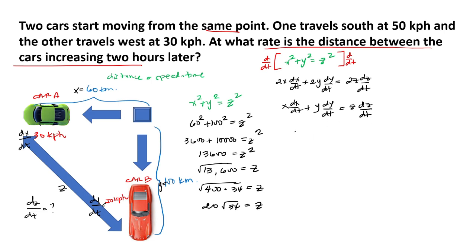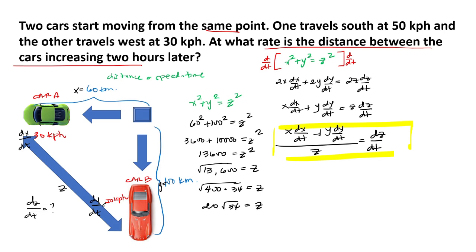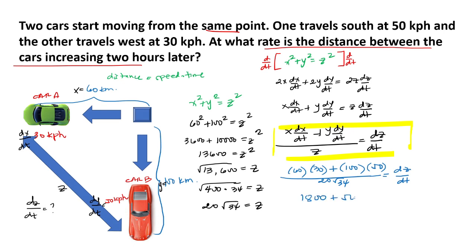To get dz/dt, we divide both sides by z, giving us dz/dt equals [x(dx/dt) plus y(dy/dt)] all over z. Substituting our values: x is 60, dx/dt is 30, y is 100, dy/dt is 50, and z is 20 square root of 34. This gives us (1800 plus 5000) over 20 square root of 34.